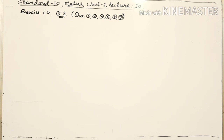Here we'll learn about question number two in exercise 1.4. We are asked to find out whether the number has a terminating decimal expansion or a non-terminating repeating decimal expansion.